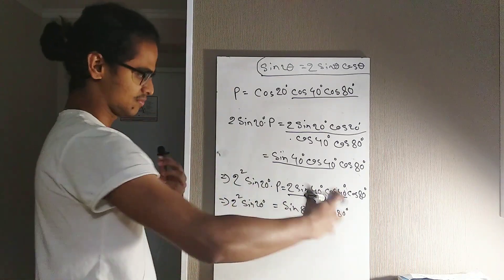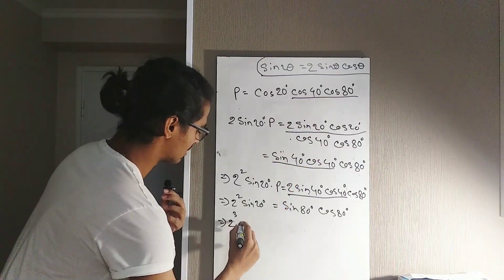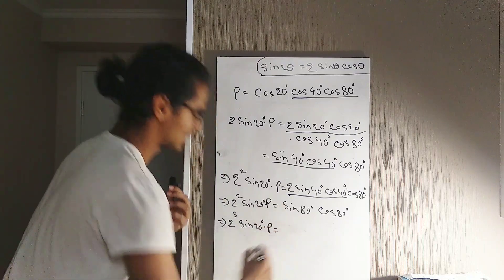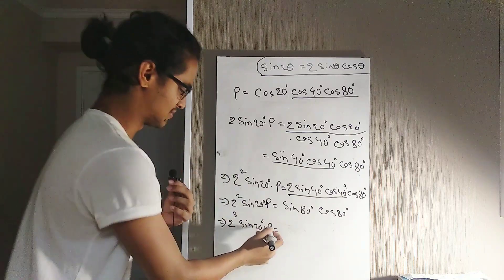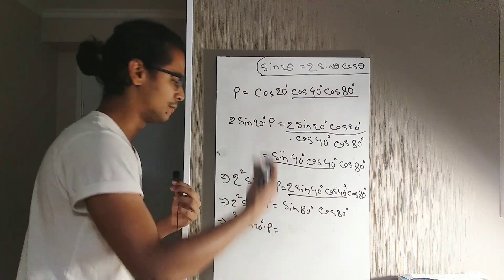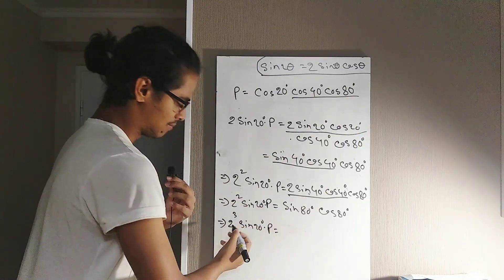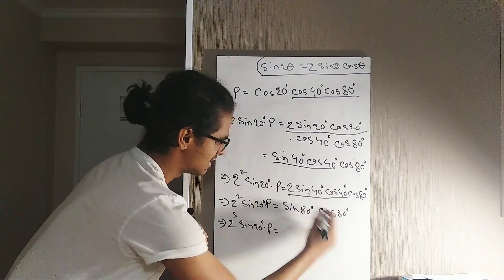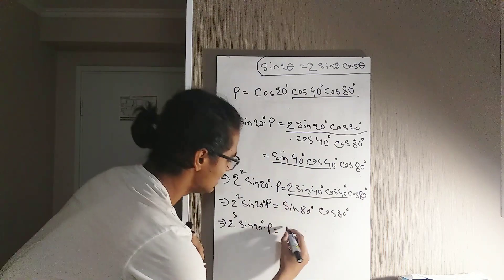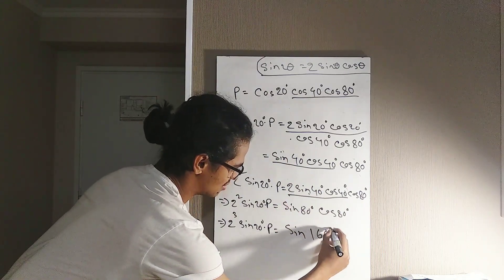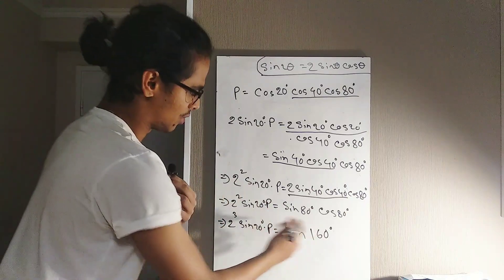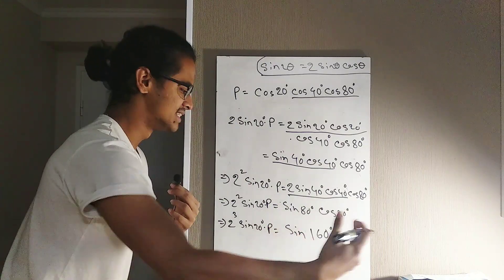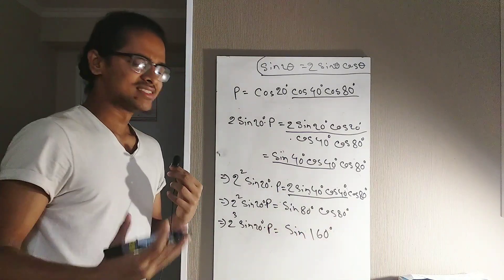I'm going to multiply both sides by 2 again, giving 2³ · sin 20° · P on the left side. On the right side, 2 sin 80° · cos 80° equals sin 160°. So our equation becomes 2³ · sin 20° · P = sin 160°.